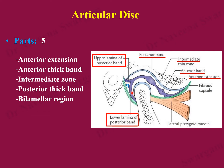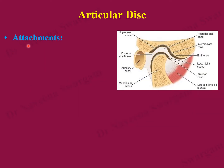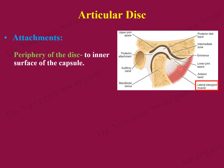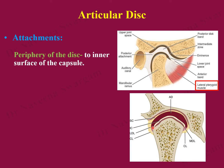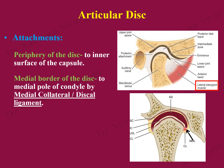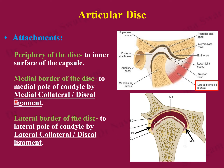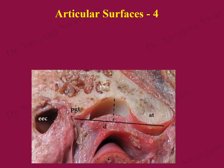The bilamellar region has upper and lower lamina separated by a venous plexus. The periphery of the disc is attached to the inner surface of the capsule and receives a few fibers from the lateral pterygoid muscle, which is why the disc is said to be morphologically the degenerated primitive insertion of the lateral pterygoid muscle. The medial and lateral borders of the disc are also attached to the corresponding poles of the head of the mandible through discal ligaments, also known as medial and lateral collateral ligaments.